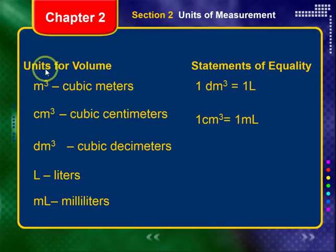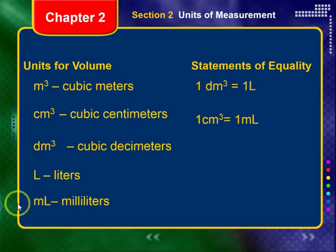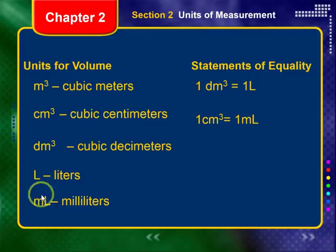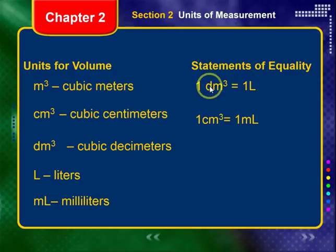There are several units for volume. The cubic meter is very large and not very useful in this course. We'll use the cubic centimeter and milliliters more often because it's convenient to convert between them — one cubic centimeter is exactly equal to one milliliter. One decimeter cubed equals one liter. One centimeter cubed equals one milliliter, which is one-thousandth of a liter. Remember these statements of equality because you'll use them to create conversion factors.